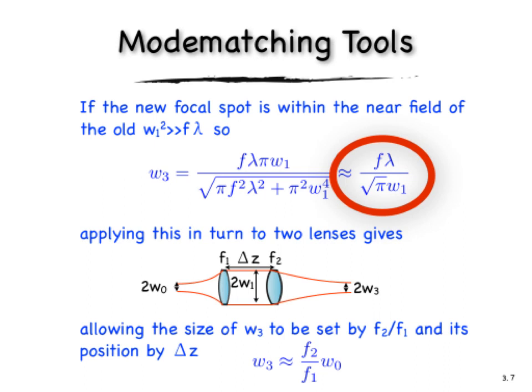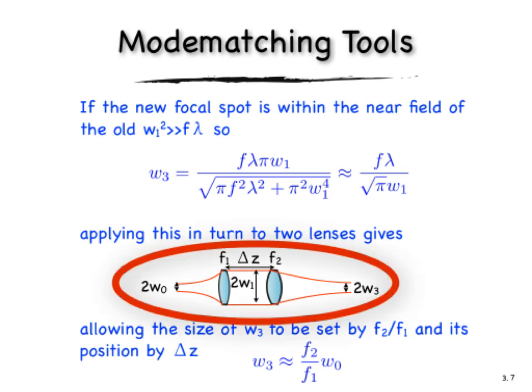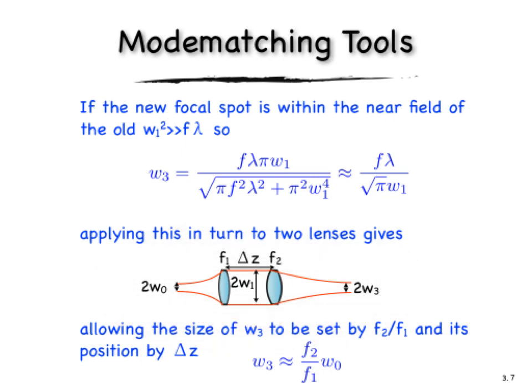The larger our input spot, W1, the smaller our output spot, W3, will be, and vice versa. So this is useful in its own right, but it's particularly powerful when we cascade two lenses together. So imagine the scenario shown in the bottom where we have a small waist expanded and then collimated by a lens, and then that collimated beam is focused down to a waist again.